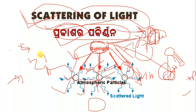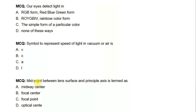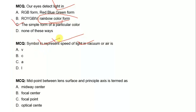I hope we are very interested in the MCQ discussion. First question: our eyes detect light — answer: light index. Next question: symbol to represent the speed of light in vacuum. Next question: the midpoint between lens surface and principal axis — answer: the optical center.